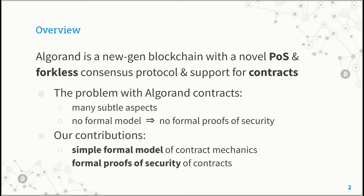The subject of study of this work is Algorand, a new generation blockchain featuring an interesting consensus algorithm based on proof of stake, which has the very nice property of ensuring the absence of forks in the blockchain.